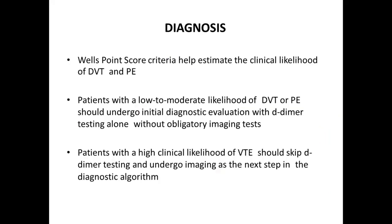How do you make the diagnosis? History taking is most important, and you should calculate the Wells score. This criterion helps you estimate the clinical likelihood of a patient having DVT or PE. If the Wells score indicates low likelihood, you undergo initial diagnostic evaluation with D-dimer alone without imaging. If the patient has high likelihood, you should proceed directly to imaging.